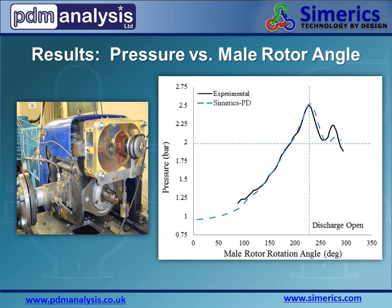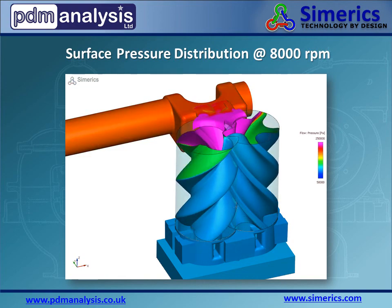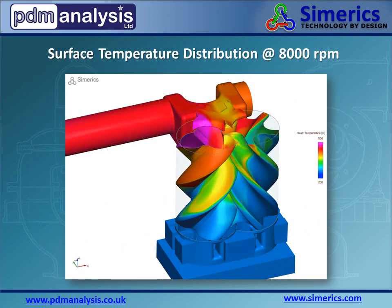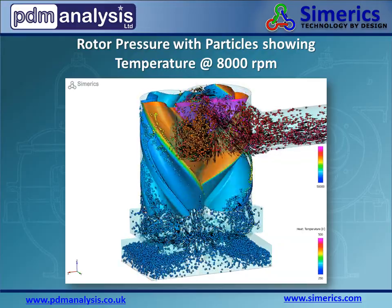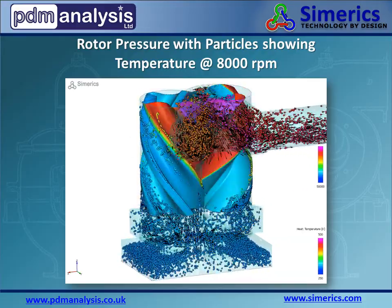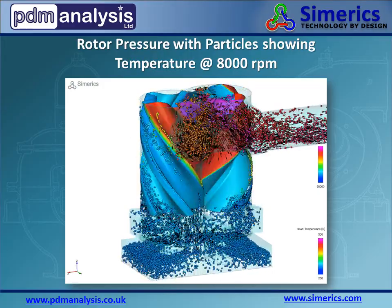This is an animation created with Symerix PD of the pressure distribution on the surfaces of the rotor at 8000 RPM. Here, the surface temperature is displayed indicating a range of 250 to 500 Kelvin. In this animation, particles were introduced to visualize any swirling patterns that would indicate areas of inefficiency. Notice the high level of vorticity at the suction inlet.